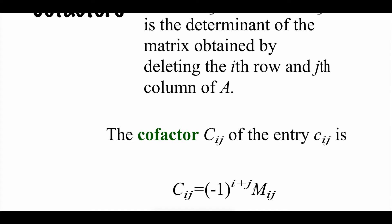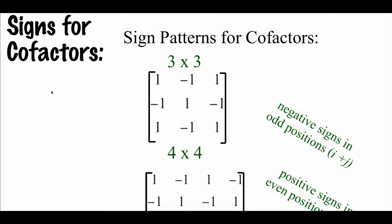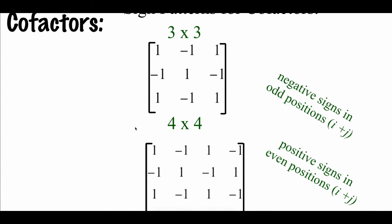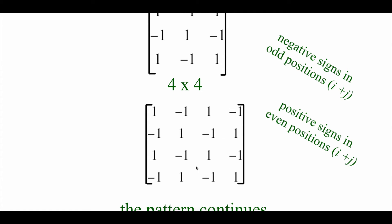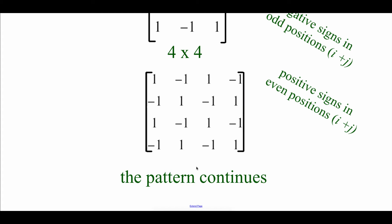I'm going to look at a cofactor sign chart. As we're taking those minors and building the cofactor matrix, sometimes we change signs and sometimes we keep the sign the same. In a 3x3 matrix, everywhere you see a positive 1 means we keep the sign the same for that entry, and everywhere we see a negative 1 means we change the sign from our minor matrix. For a 4x4, we extend it by adding an extra column and row, and that pattern continues for 5x5, 6x6, and so on.